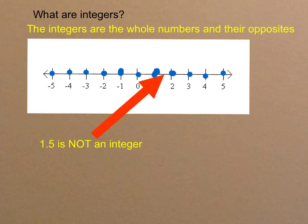However, the numbers between the whole numbers and their opposites are not integers. So, for example, 1.5, halfway between 1 and 2, is not an integer.